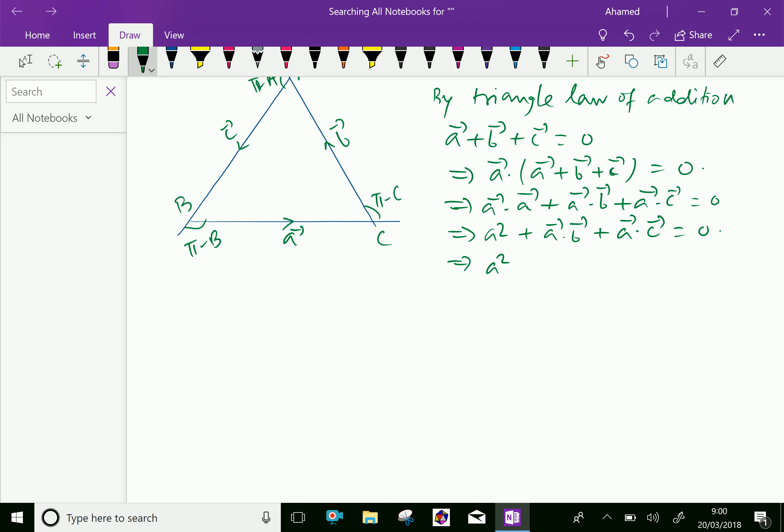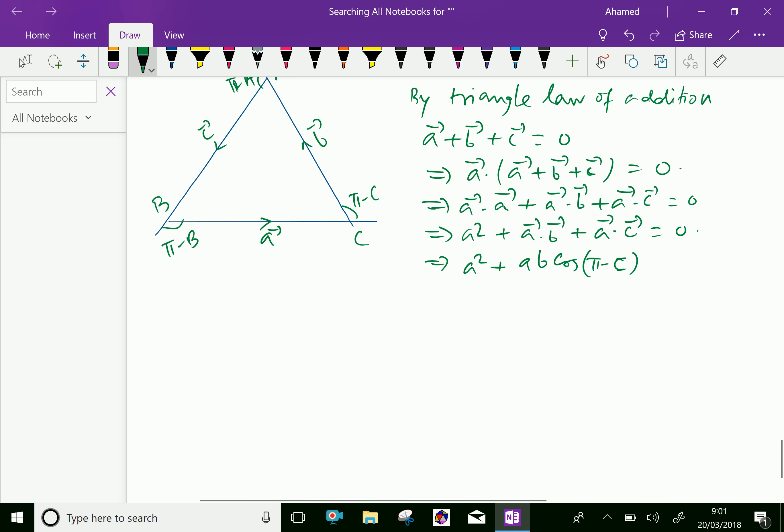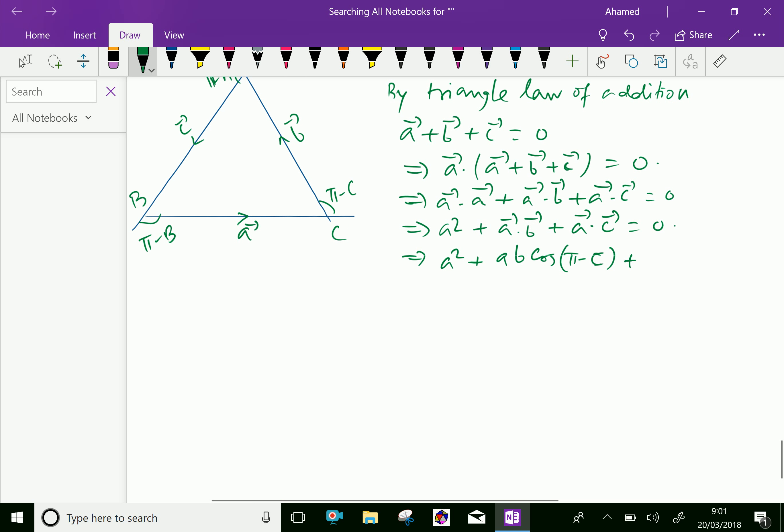This gives further a squared plus vector a dot vector b equals ab cos π minus c, plus ac cos π minus b equals zero.